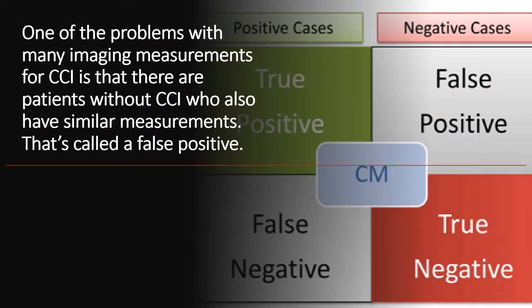One of the problems with diagnosing cranial cervical instability that's usually not talked about very often is that patients without CCI may also have similar measurements to patients with CCI. So when we do things like a Grabb-Oakes or a Powers ratio or a clivo-axial angle, there's some mixture between patients who are totally normal and have no issues but will have abnormal measurements, and patients who have cranial cervical instability who also have abnormal measurements.